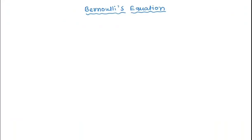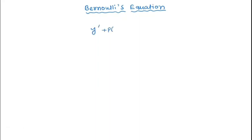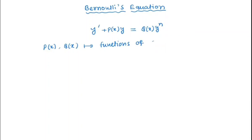Bernoulli's equation is a first order differential equation of the form y prime plus p(x) times y equal to q(x) times y^n, where p(x) and q(x) are both functions of x. Note that this equation is not linear.